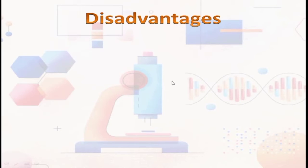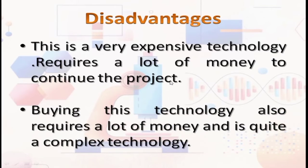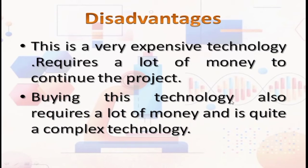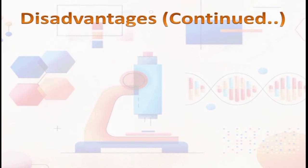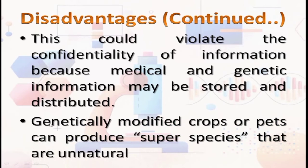If it has advantages, there must be some disadvantages. The disadvantages are: this is a very expensive technology that requires a lot of money to continue a project, and buying this technology also requires a lot of money. It is quite a complex technology. Another disadvantage is that it could violate the confidentiality of information, because medical and genetic information may be stored and distributed. Also, genetically modified crops or pets can produce super-species that are unnatural.